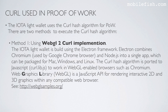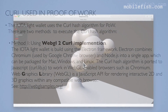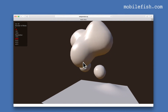Method 1: Using WebGL curl implementation. The IOTA light wallet is built using the Electron framework. Electron combines Chromium, used by the Google Chrome browser, and Node.js into a single app which can be packaged for Mac, Windows, and Linux. The curl hash algorithm is ported to JavaScript, called curl.lib.js, to work in WebGL enabled browsers such as Chromium. Web Graphics Library is a JavaScript API for rendering interactive 2D and 3D graphics within any compatible web browser.